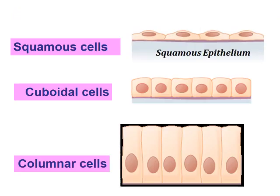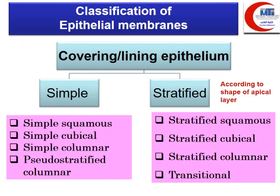Epithelial cells may have different shapes: squamous — flattened cells with flat nuclei; cuboidal — cube-like with central rounded nuclei; or columnar — length greater than width with basal oval nuclei. Simple epithelium is named by cell shape: simple squamous, simple cuboidal, simple columnar, and pseudostratified columnar. Stratified epithelium is named by the shape of the apical layer: stratified squamous, stratified cuboidal, stratified columnar, and transitional.